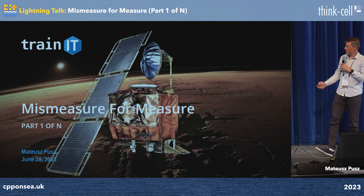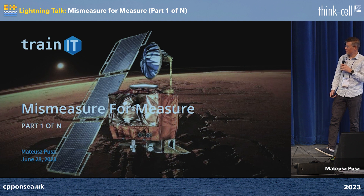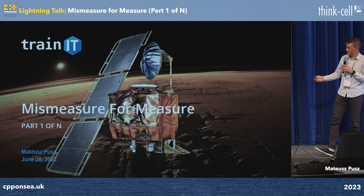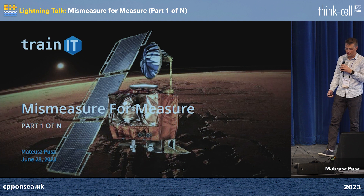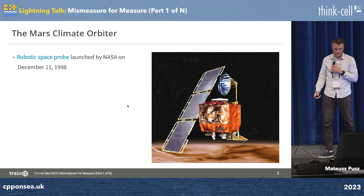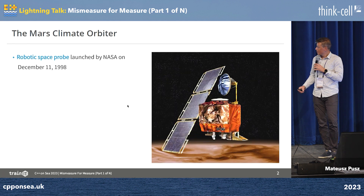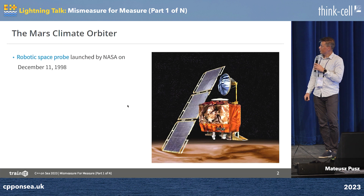Of course, the first one has to be about the biggest, the most expensive, and the most famous mistake we did in engineering with units in our human history. So it is about the Mars Climate Orbiter.